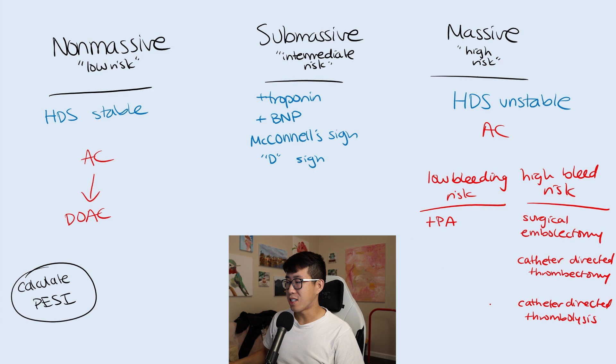You can also consider catheter directed thrombolysis, but this is not really that evidence-based. They take a catheter and go directly up to that blood clot and squirt a little bit of anticoagulant right at that area in the hopes that this reduces the systemic bleeding risk. But to be honest, if you read all of the guidelines, it's not really that recommended. The evidence for it is not that good and it seems like they still have the same bleeding risk whether you give a full dose of TPA versus catheter directed thrombolysis. In general, it's not that favored.